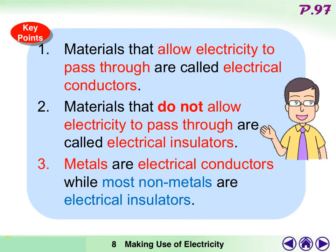Here are three main points. Materials that allow electricity to pass through are called electrical conductors. Materials that do not allow electricity to pass through are called electrical insulators. Metals are electrical conductors, while most non-metals are electrical insulators.